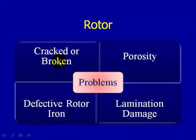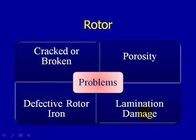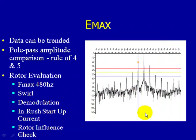Some of the problems that can occur inside the rotor include cracked or broken rotor bars, porosity in the cast aluminum design, defective rotor iron, or lamination damage. These broken bars, porosity, or other problems create heat or high temperatures and a subsequent loss of torque. So it's important that we monitor the rotor, make sure it's healthy, and that it's operating in a good, stable condition.